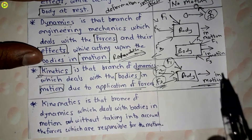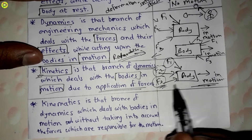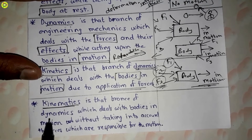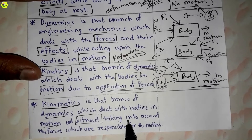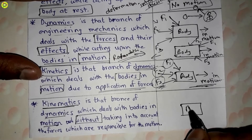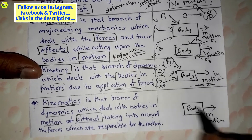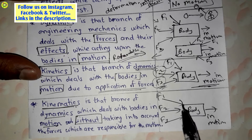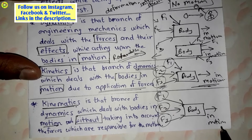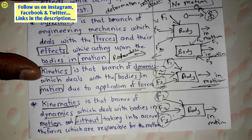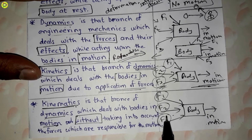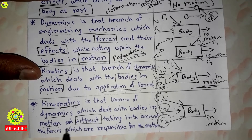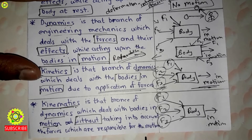Kinematics is that branch of dynamics which deals with bodies in motion without taking into account the forces which are responsible for the motion. Suppose this is a body in motion and there are forces F1, F2, and F3. In kinematics, we do not take into account the forces which are responsible for the motion of the body while doing calculations.